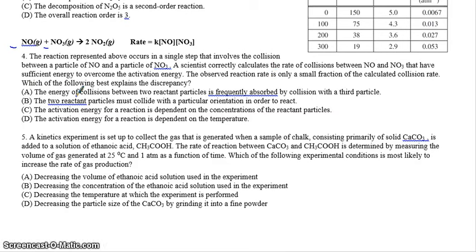A says the energy of collisions between two reacting particles is frequently absorbed by a third particle. We don't really see a third particle. That one can't be true because there's only two particles in the reaction. B says the two reacting particles must collide with a particular orientation. And this is correct. Not only should the particles collide with enough energy, they have to collide with the right orientation. Otherwise they will not bond with each other. B is actually the correct answer. C says the activation energy for reaction is dependent on the concentration. That's actually not true. The activation energy is dependent on how much energy they must collide with. Activation energy for reaction is dependent on the temperature. This is also not true. Temperature doesn't raise or lower the activation energy. It just gives the particles more energy to overcome the activation barrier. Remember, the only thing that lowers the activation energy is a catalyst. So this would be a catalyst that would lower the activation energy.